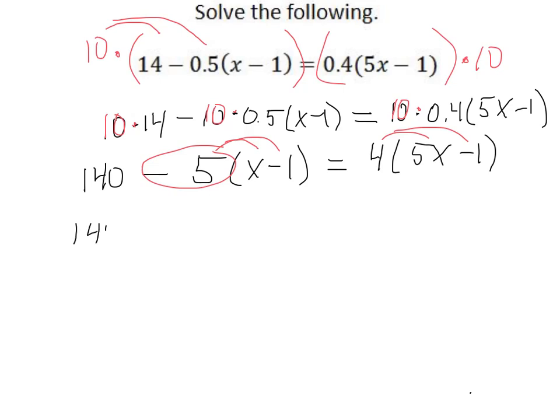So we'll have 140, negative 5 times x is negative 5x, negative 5 times negative 1, two negatives make a positive 5. On the right side, 4 times 5x is 20x, and 4 times negative 1 is negative 4. Make sure you are distributing, if you have a subtraction like this case, you're distributing the whole negative 5 through to all terms inside the parentheses. Here it's positive 4, we distribute that through.